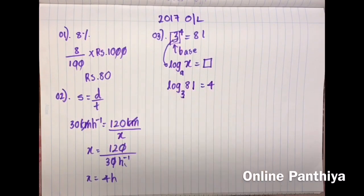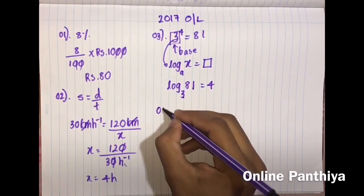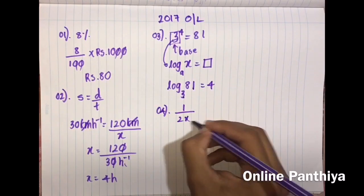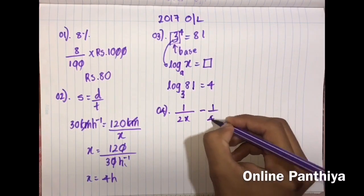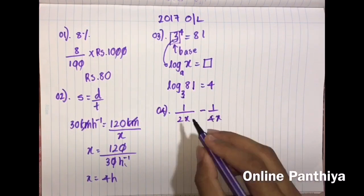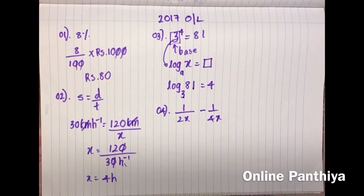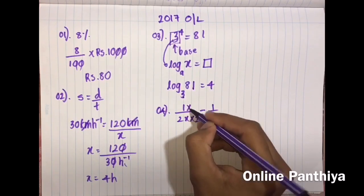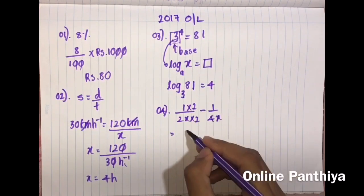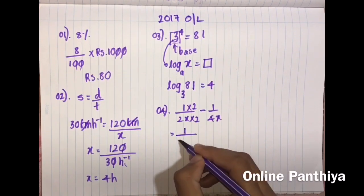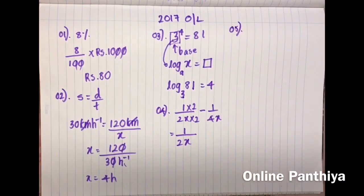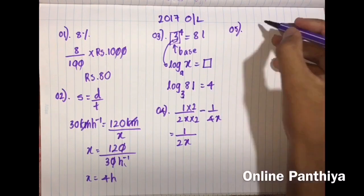Question 4: Simplify the two fractions. When adding or subtracting fractions you must make the denominators the same. Since the denominators are not the same, multiply by 2. That gives you 2 minus 1 equals 1 over 2x.